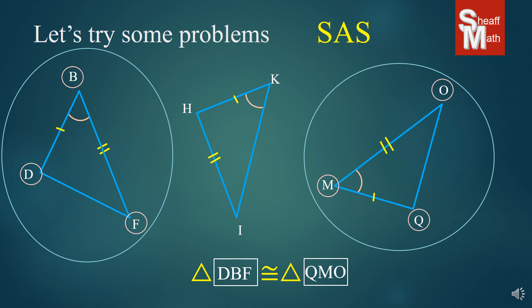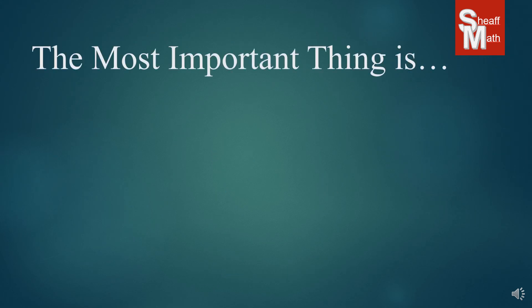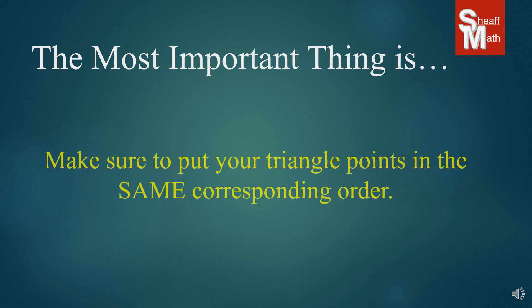Now, we're finished, but the most important thing that I want you to know is that when you are writing that final congruency statement, I need you to make sure that you put your triangle points in the same corresponding order. I can't reiterate that enough. If you don't, it is completely wrong. You may be able to identify that two of the triangles are congruent, but if you don't put them in order, it's not correct.